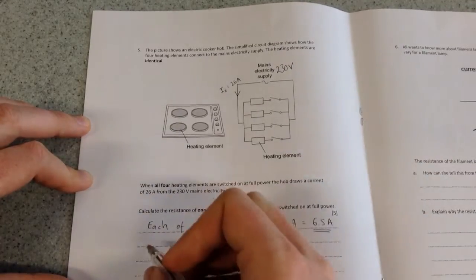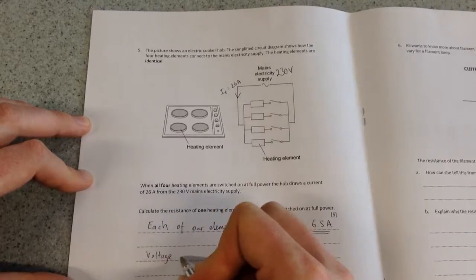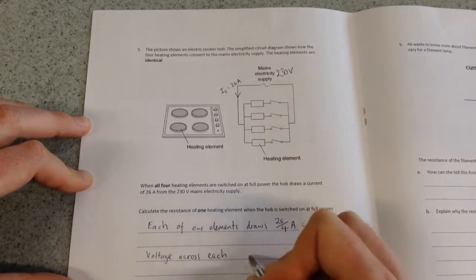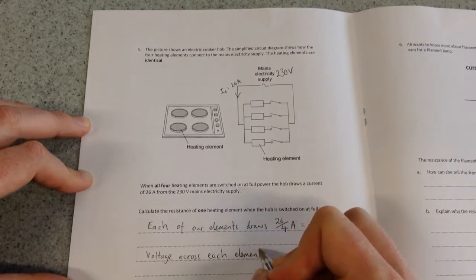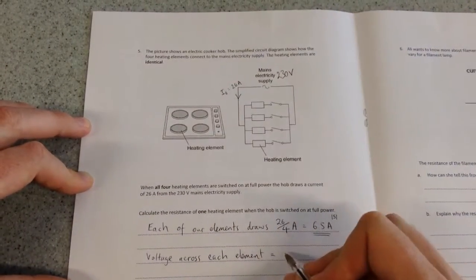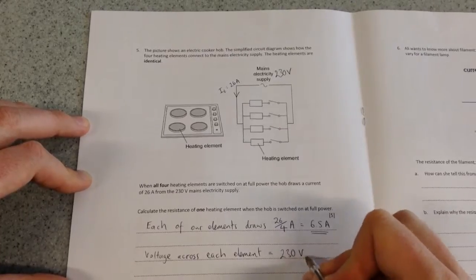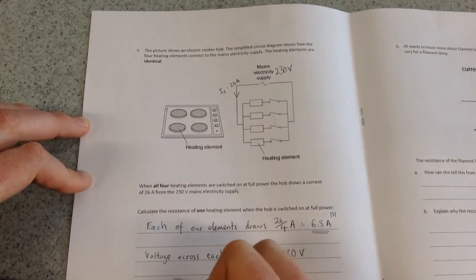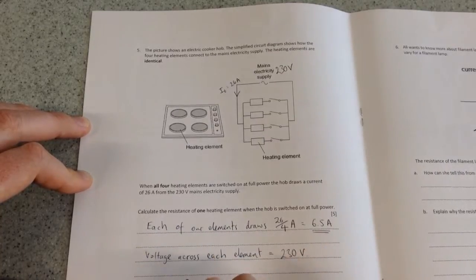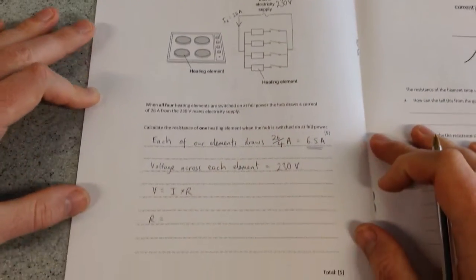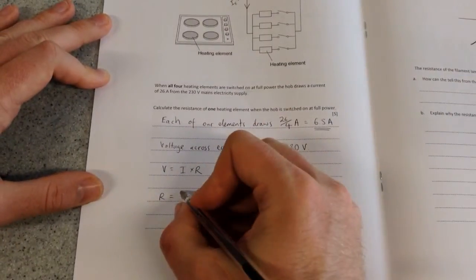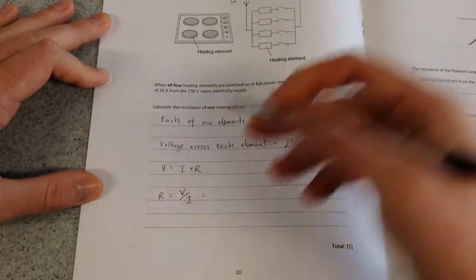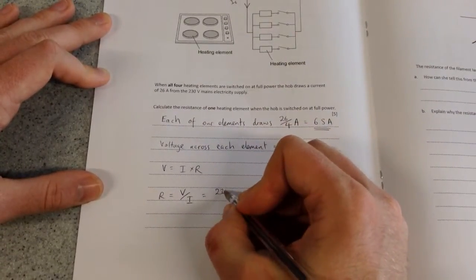And we know that the voltage across each branch and therefore each element is equal to the main supply, which is 230 volts. So it's therefore now a very simple thing, just using V equals IR. And therefore to find the resistance, it's going to be R equals V over I. The voltage across one element, 230 volts.